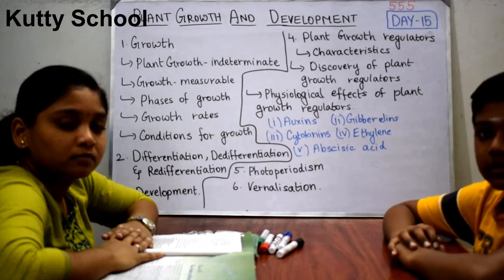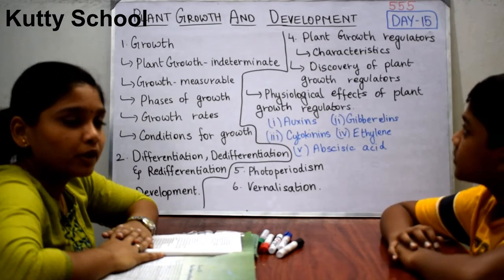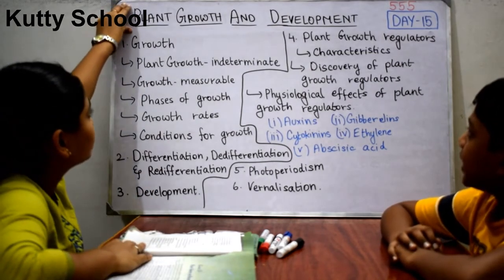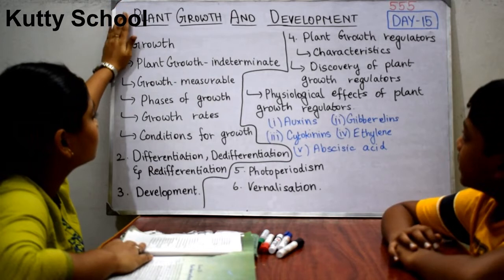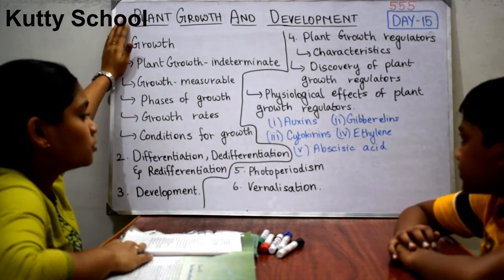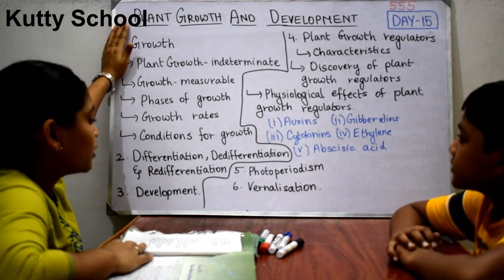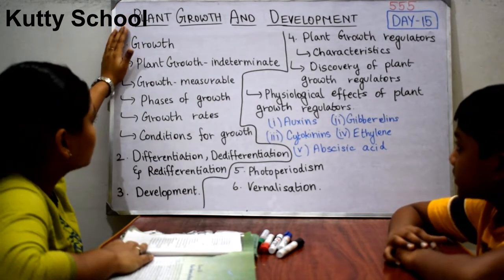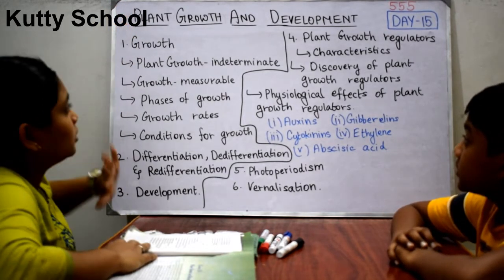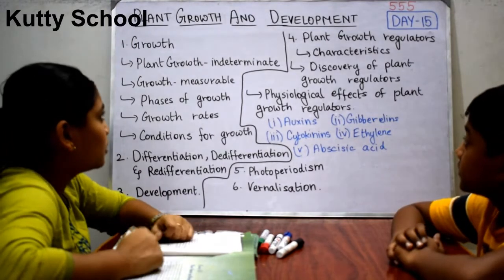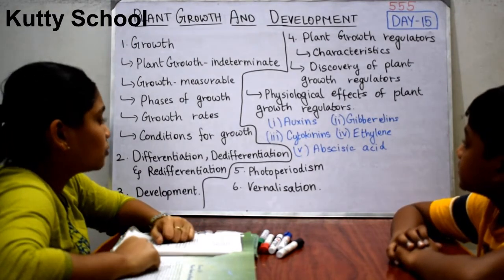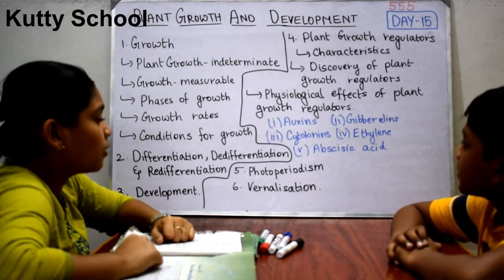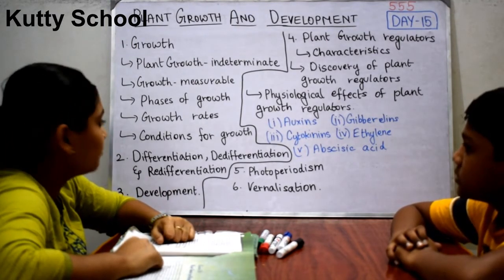Hello everyone, welcome to Kutishpur. Today we are going to discuss about the chapter plant growth and development. In this chapter there are totally six topics. We are going to see what are the growth stages in plants and how development occurs.